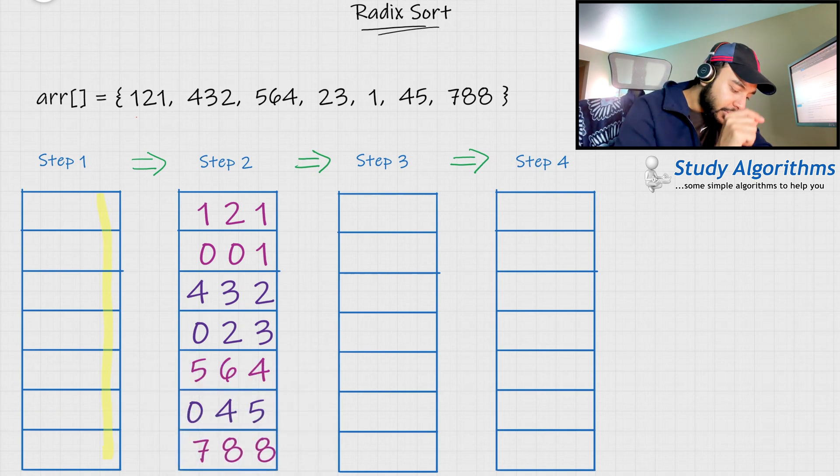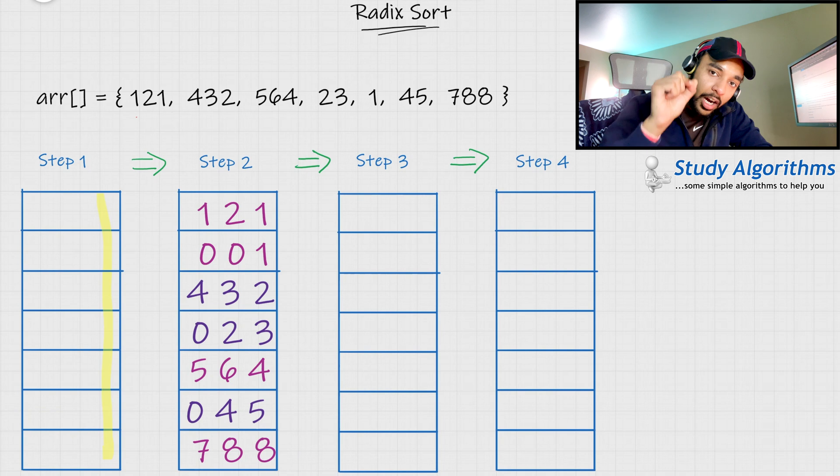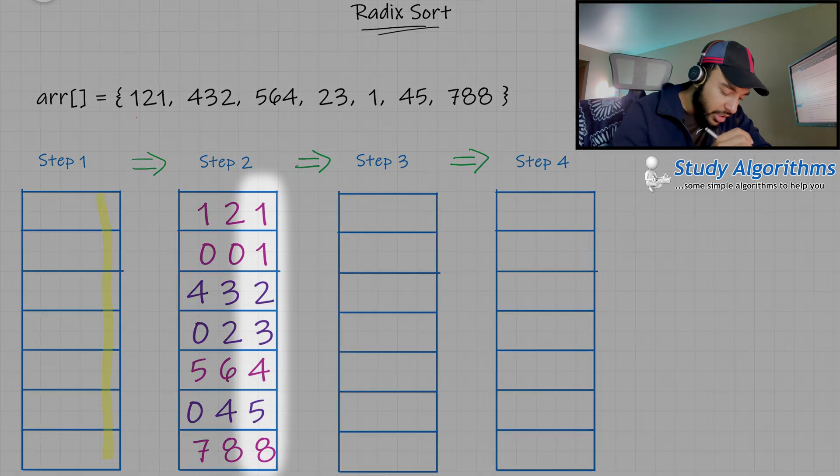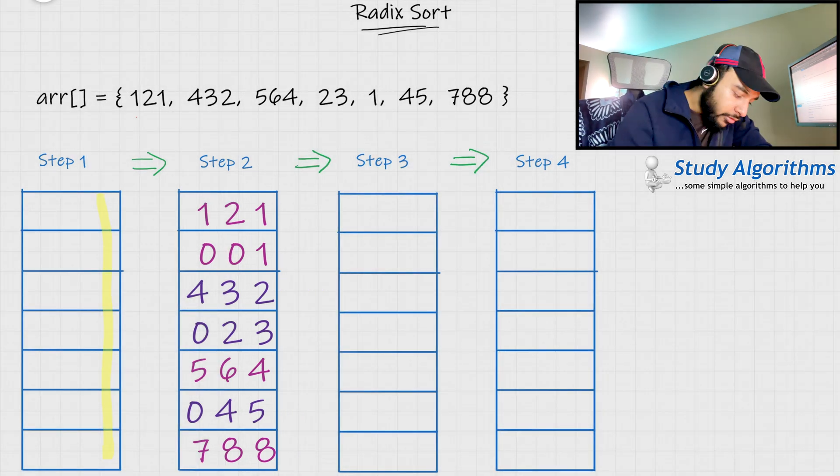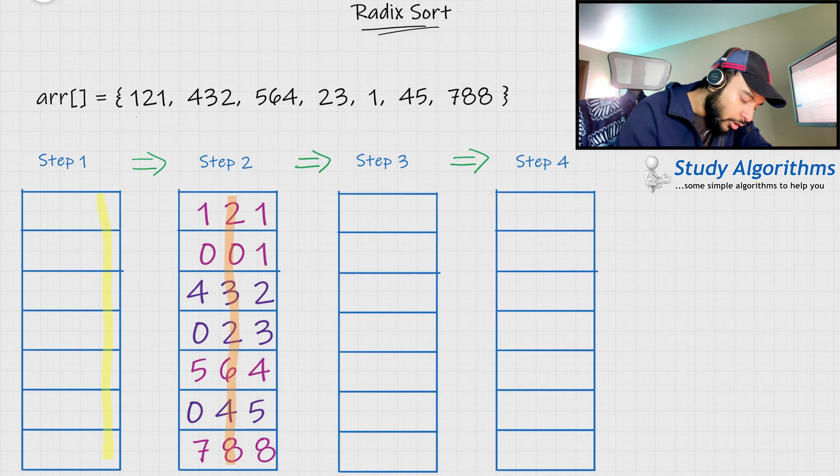So you see, we have sorted all of these numbers according to the digit in their units place. Going forward, what we will do is, we will sort all of these numbers according to the digit in their tens place. So, once again, you start from the beginning.